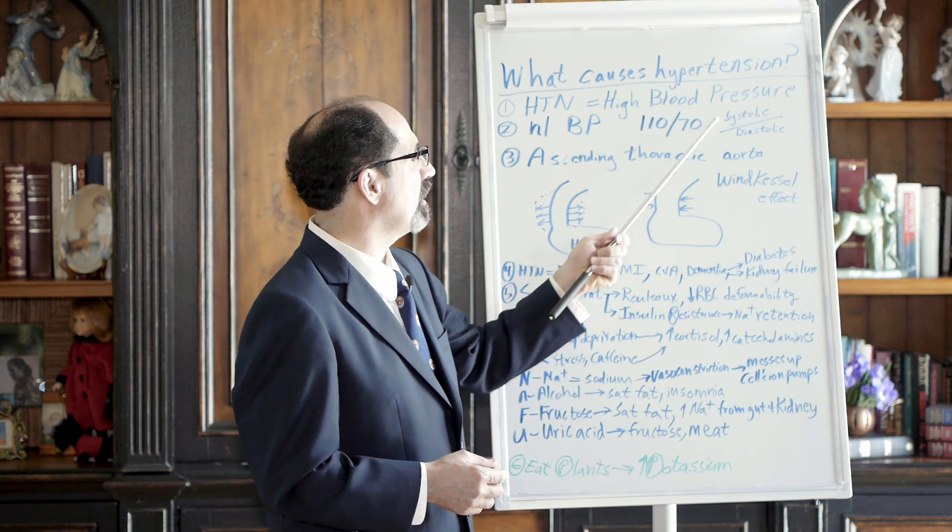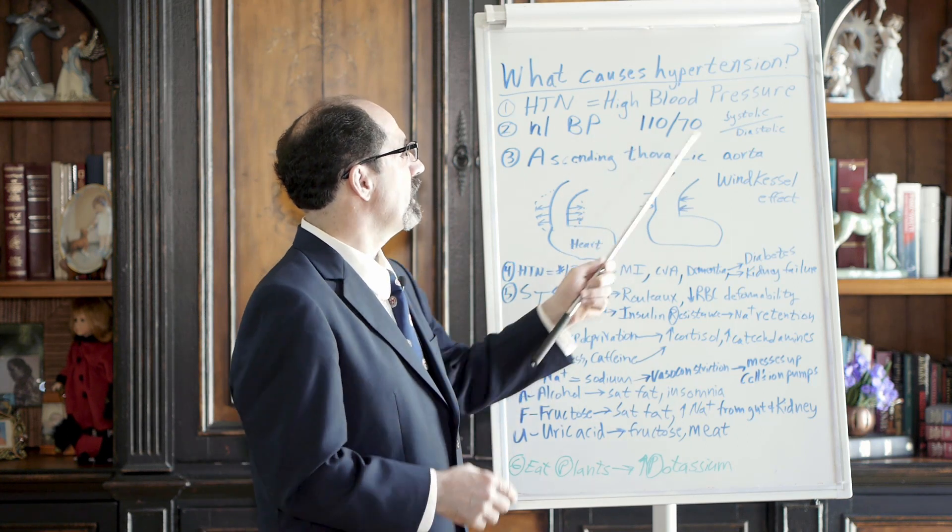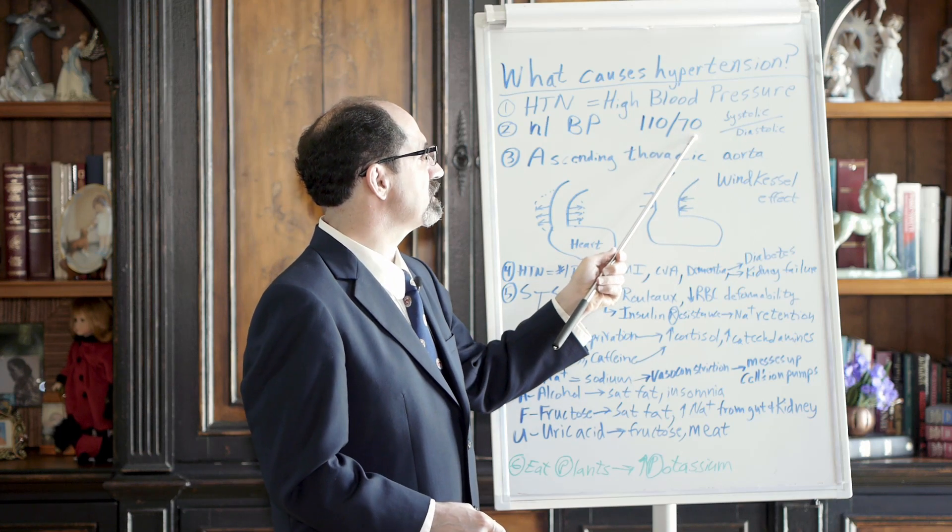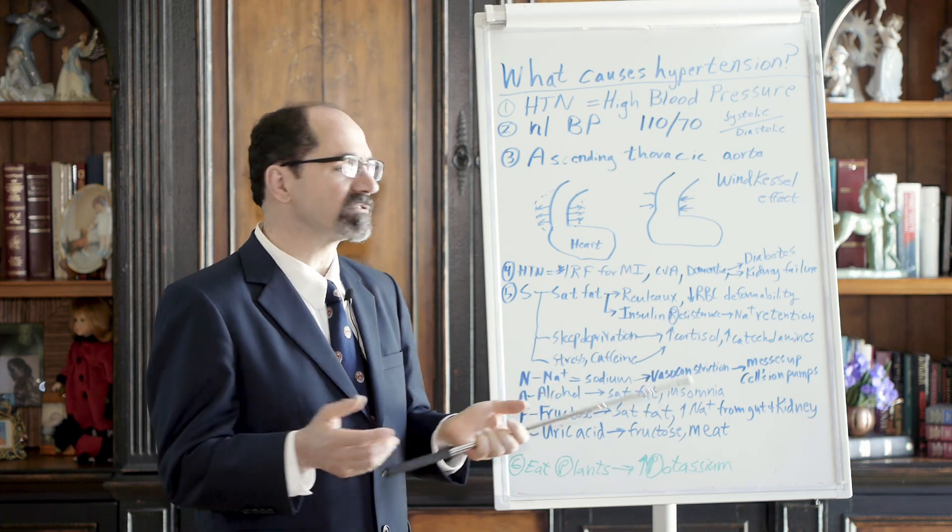The number on top is called the systolic. Systolic means heart contraction. The number on the bottom is always lower, and that is diastolic. That's during cardiac relaxation, when the heart's relaxing.